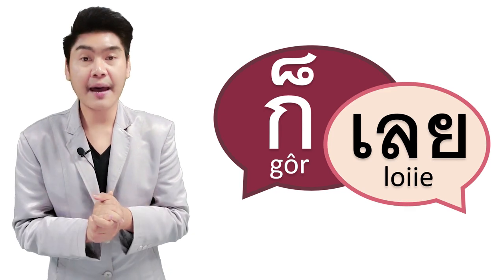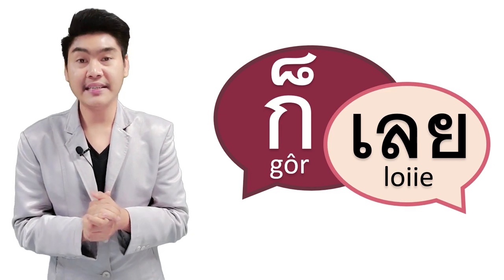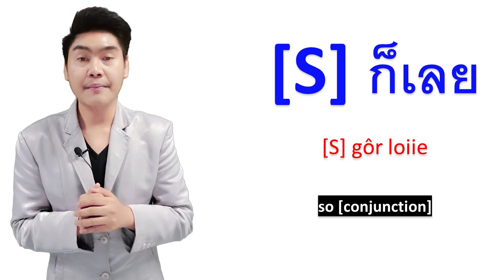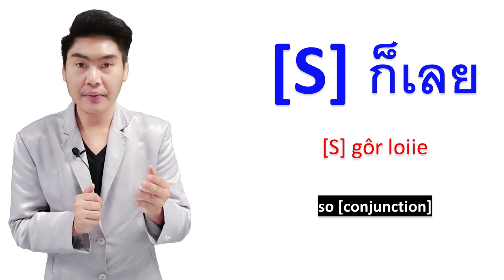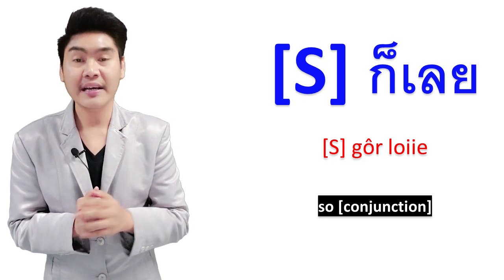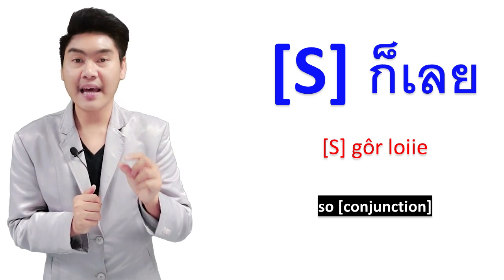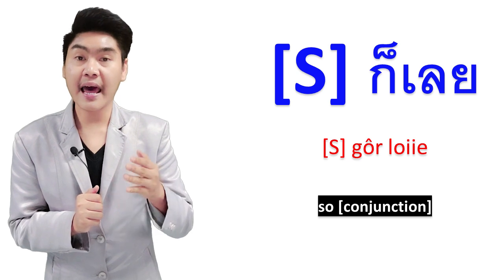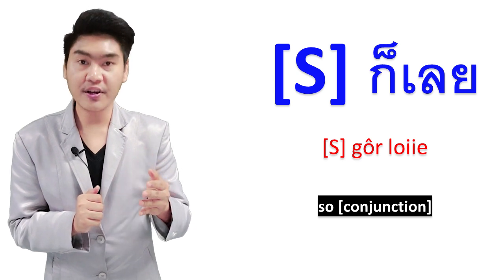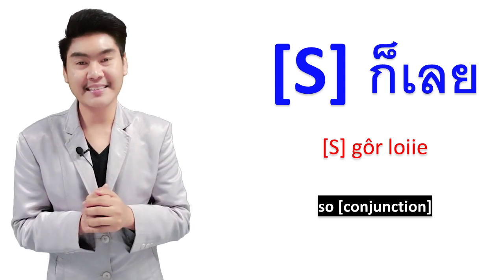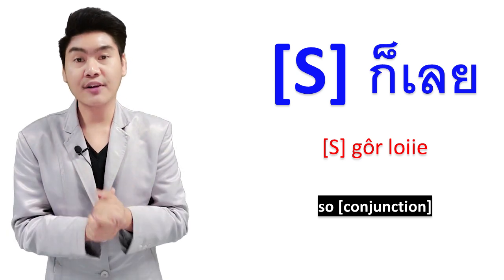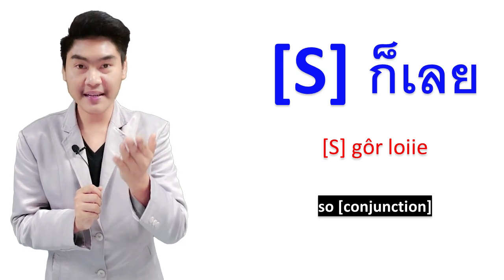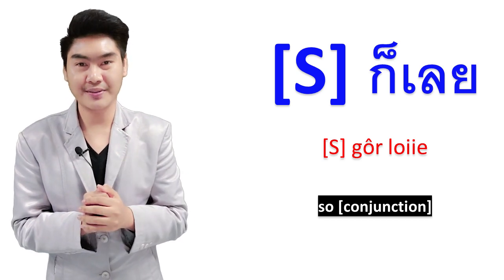The first meaning I'm going to teach you is Go Loi. Go Loi means 'so' in English and is used as a conjunction. Go Loi is placed after a subject in a sentence. You can learn how to say subject and Go Loi from these examples.